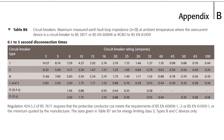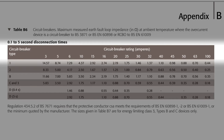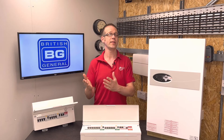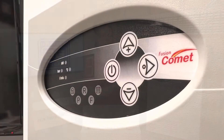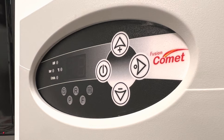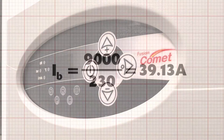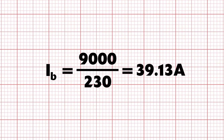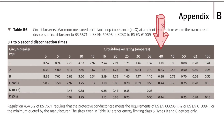A quick word of warning: not all manufacturers make all the sizes listed in those tables. For example, table B6 in the on-site guide lists MCBs across the top — while this table is designed for maximum earth fault loop impedances rather than as a circuit breaker size guide, it is a very helpful reference. In a previous video in this series we started designing a circuit supplying a Fusion Comet electric boiler, and calculated it would draw 39.13 amps. The next size up from that design current is a 40 amp breaker, making it our natural choice.